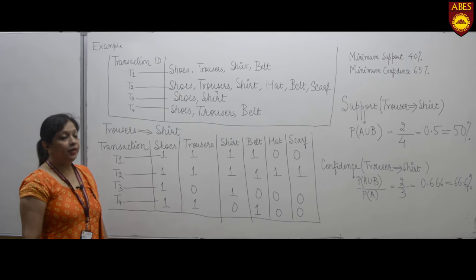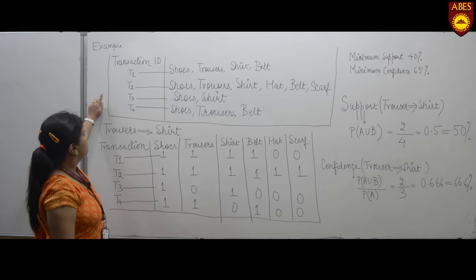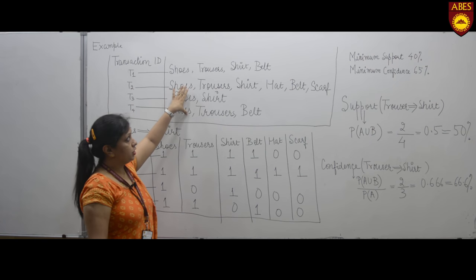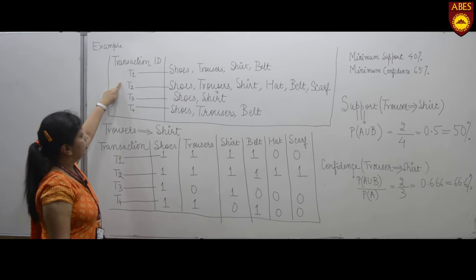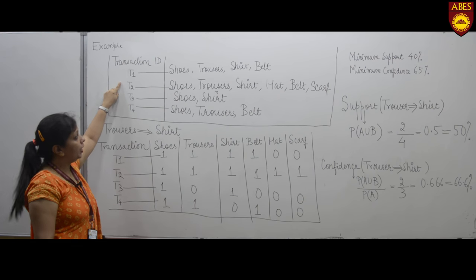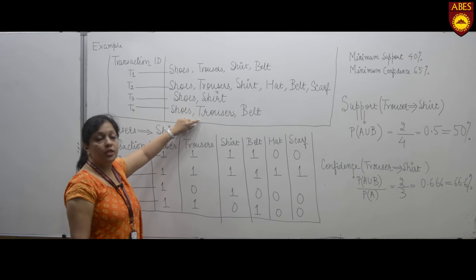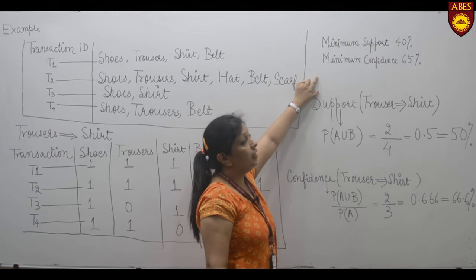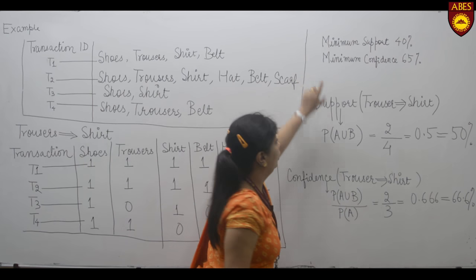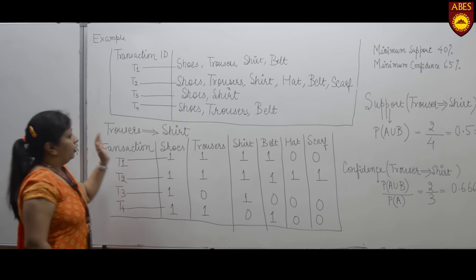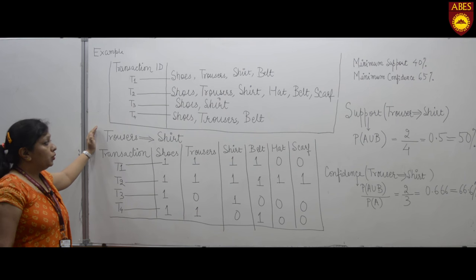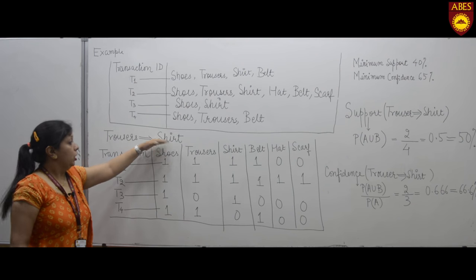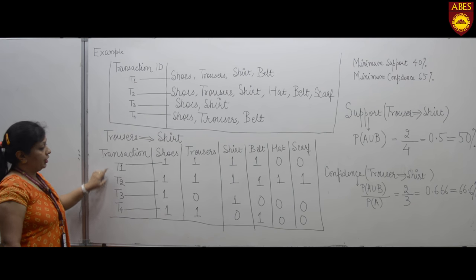This is a transaction table showing different transaction IDs and the items purchased in each transaction. We have four transactions: T1, T2, T3, and T4, with various items purchased in each. The minimum support and minimum confidence for this example are set at 40% and 65% respectively. We want to find out whether the association rule 'trouser implies shirt' is a strong association rule.